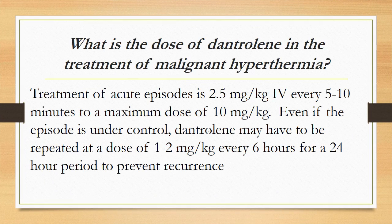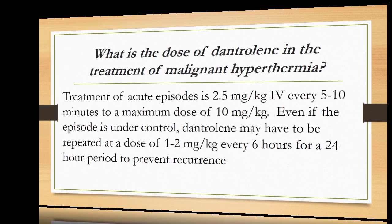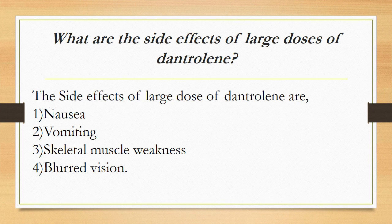What is the dose of dantrolene in the treatment of malignant hyperthermia? Treatment of acute episodes is 2.5 milligrams per kilogram intravenously every 5 to 10 minutes to a maximum dose of 10 milligrams per kilogram. Even if the episode is under control, dantrolene may have to be repeated at a dose of 1 to 2 milligrams per kilogram every 6 hours for a 24-hour period to prevent recurrence.